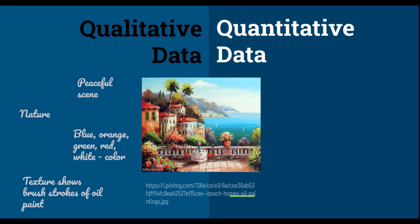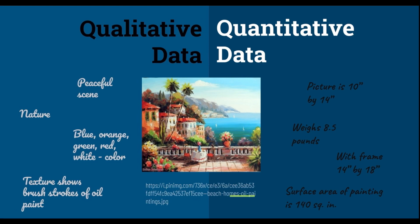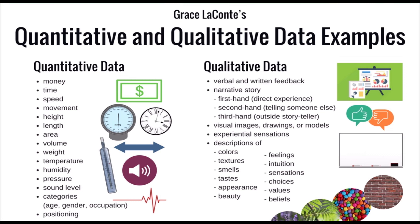But when you describe the painting as the picture is 10 by 14, the weight is 8.5 pounds, the frame is 14 by 18, and the surface area of the painting is 140 square inches — those are quantitative data. In quantitative, you can see there is length, area, volume, and weight. While in qualitative, there is verbal and written feedback, narrative story, visual image, drawing, or models.